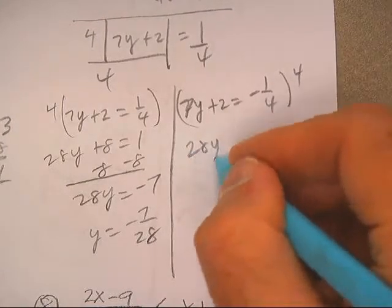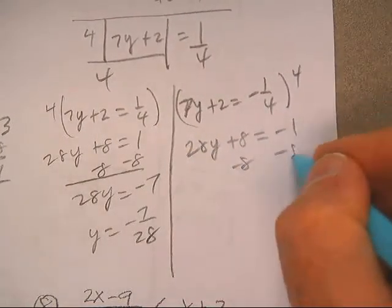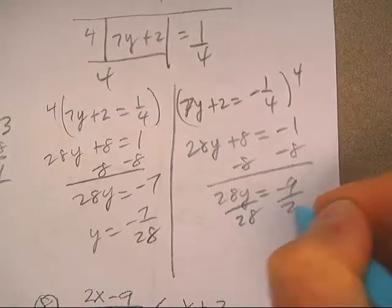I get 28y plus 8 equals negative 1. Subtract 8, 28y is negative 9, divided by 28.